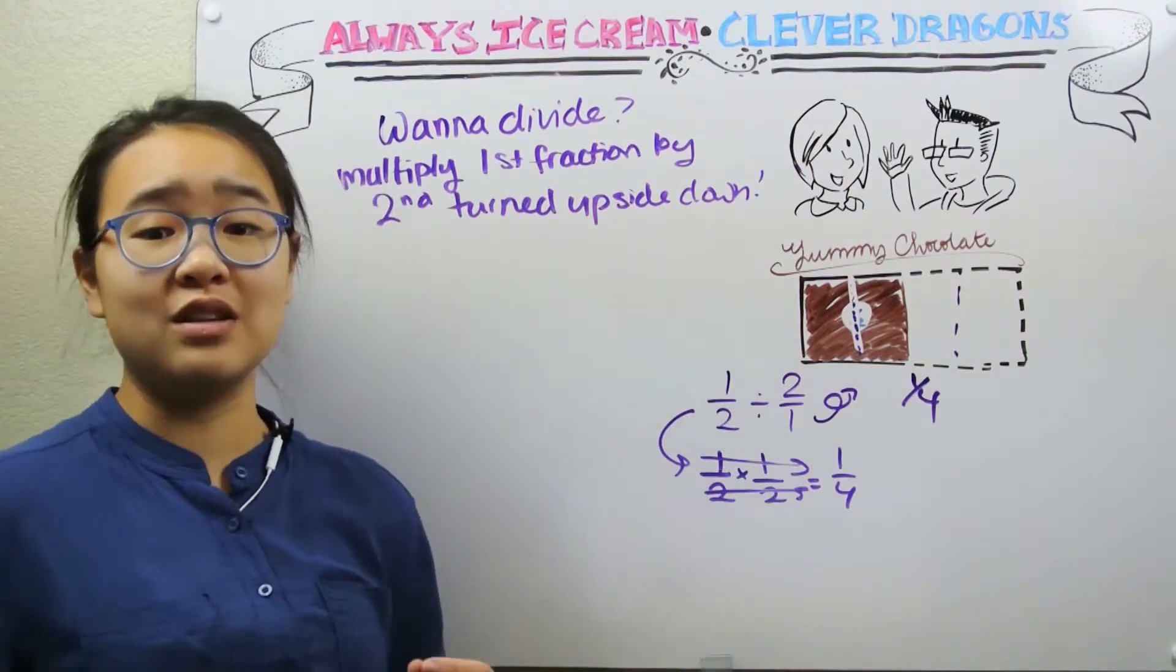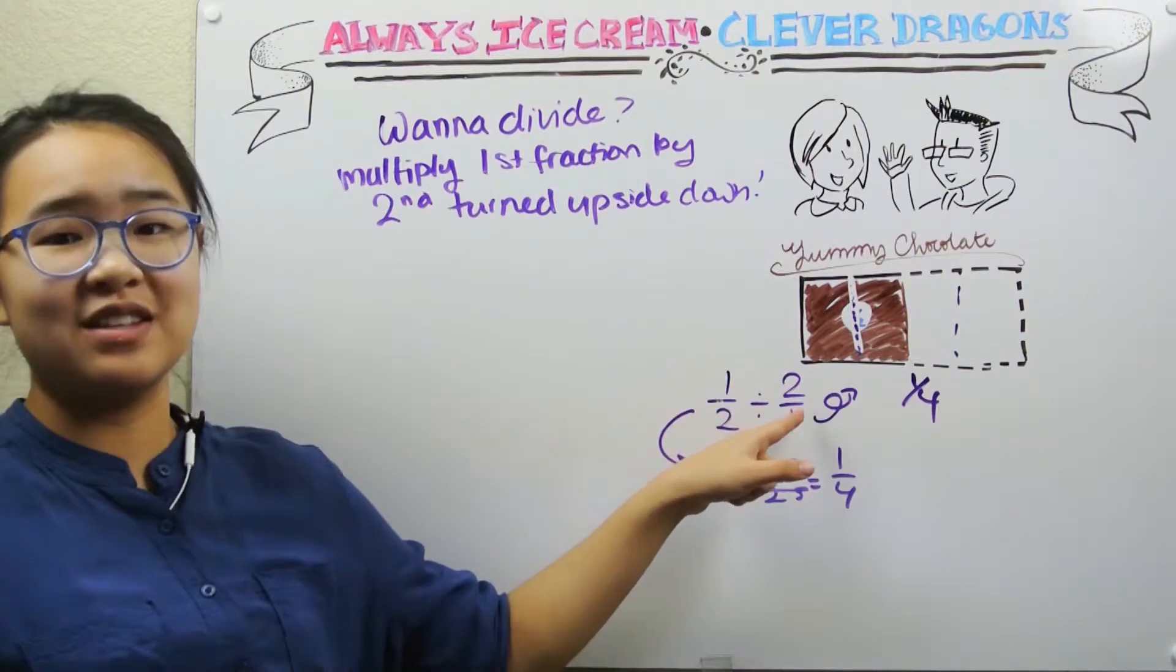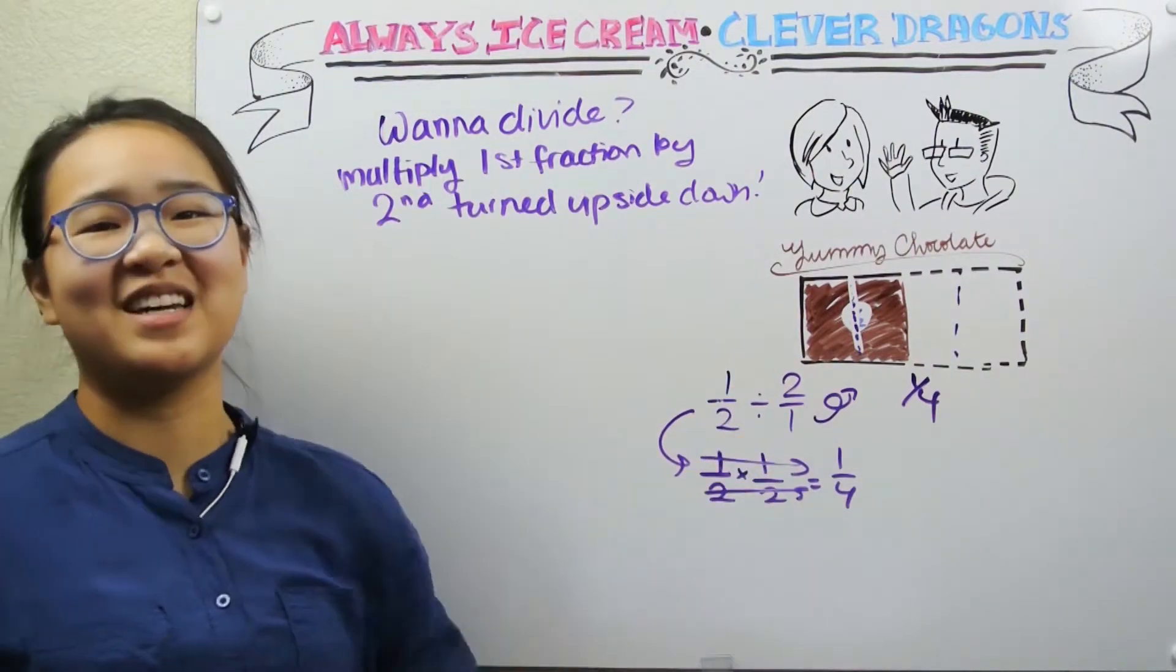Notice that if you want to divide two fractions, it's the same thing as multiplying the first fraction by the second fraction turned upside down.